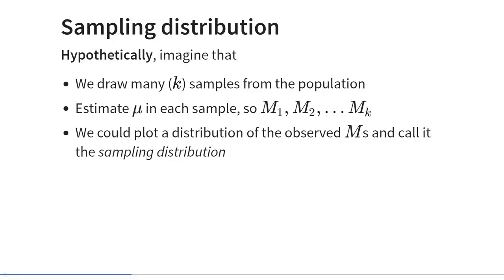How wrong is the sample statistic m as an estimator of mu? We could do a thought experiment and imagine that we could draw many samples from the same population. In each of those samples, we could calculate the sample mean m. And if we drew a distribution of all of those sample means, we could call it the sampling distribution.